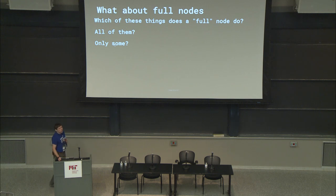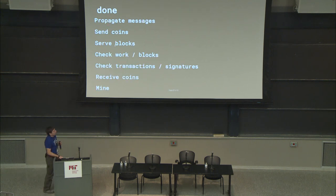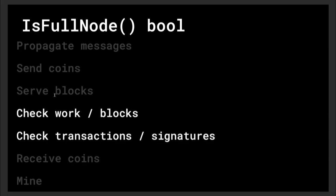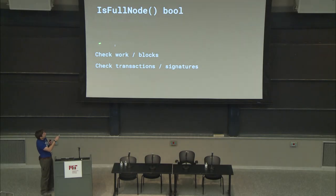What about full nodes? This is a term that is not super well defined and people definitely disagree on it. Some people say full means everything. But for the people I work with on Bitcoin, the definition of a full node is just these two things: you maintain consensus. You can have a full node that isn't even propagating network messages, with no wallet attached, no sending or receiving coins, no blocks stored, and it doesn't mine.